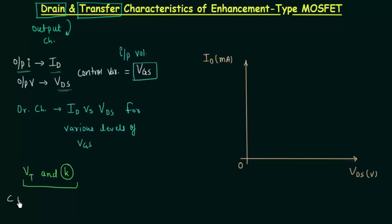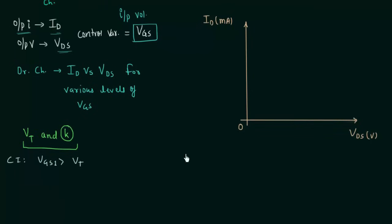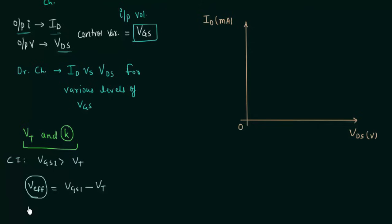In case number one for the drain characteristics, VGS is greater than VT. This means there will be a channel between drain and source. For case one I will represent VGS as VGS1. The effective voltage, represented as V subscript EFF, is equal to VGS1 minus VT. This effective voltage directly affects the width of the N-channel, and a significant amount of drain current can flow through it.